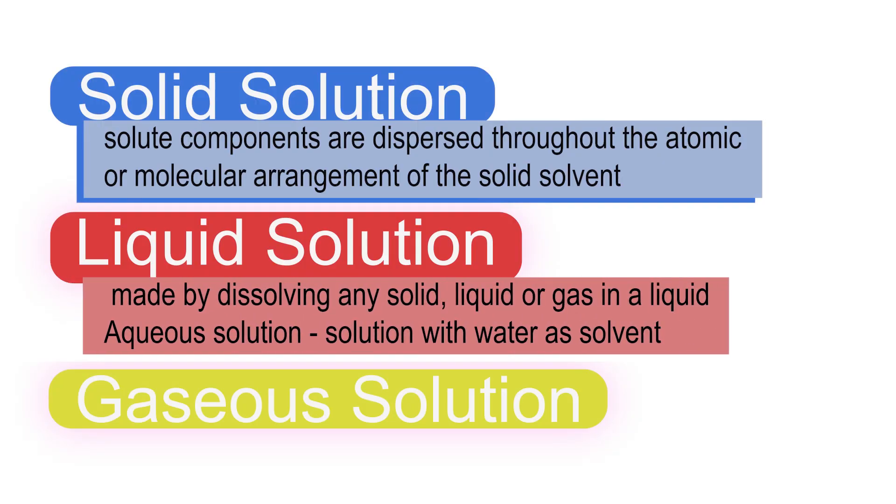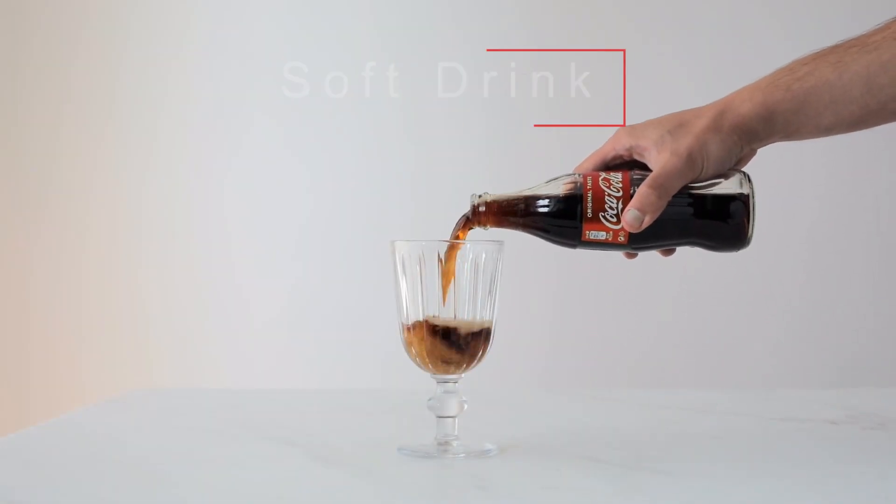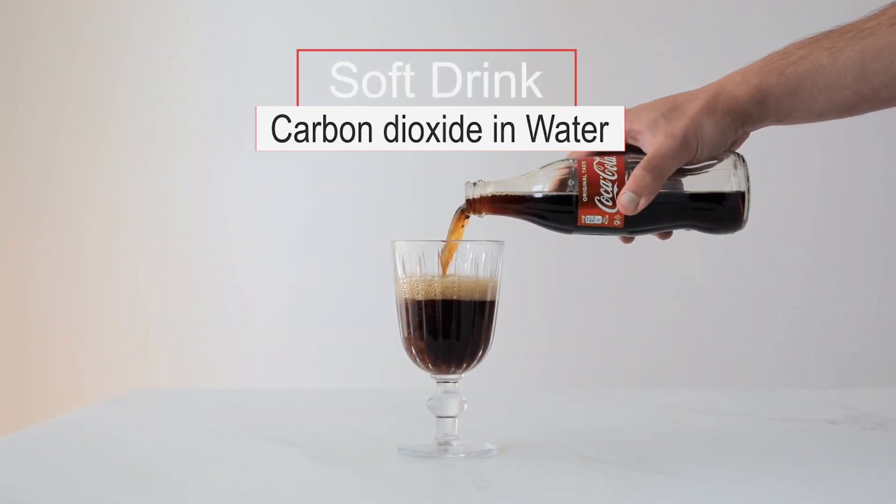A liquid solution is made by dissolving any solid, liquid, or gas in a liquid. When water acts as a solvent, the solution is called aqueous solution. For example, a soft drink is a solution of carbon dioxide in water.